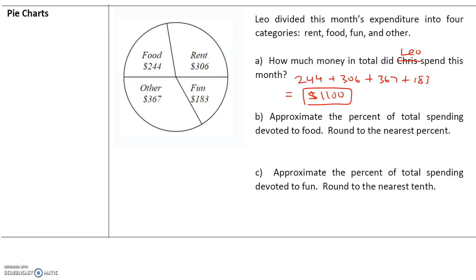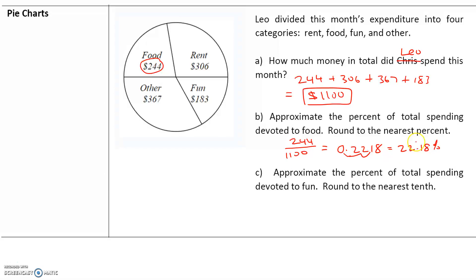When we think about percentages, we want to consider the total. Approximate the percent of total spending devoted to food. Leo spent $244 on food and $1,100 total. To find the percentage, we take the amount spent on food divided by the total: 244 divided by 1,100 equals 0.2218. To convert to percent, we move the decimal two spaces to the right, giving us 22.18%. Rounding to the nearest percent means rounding to the ones place — since the digit after is 1 (four or lower), we keep this at 22%.